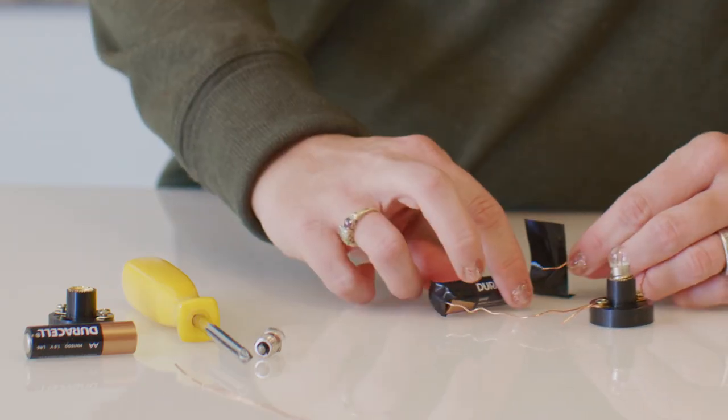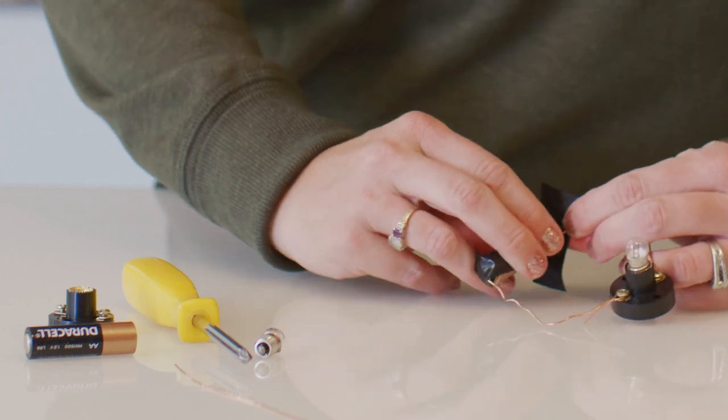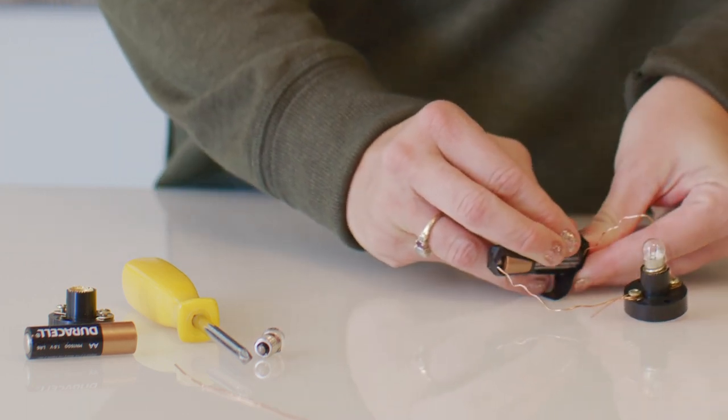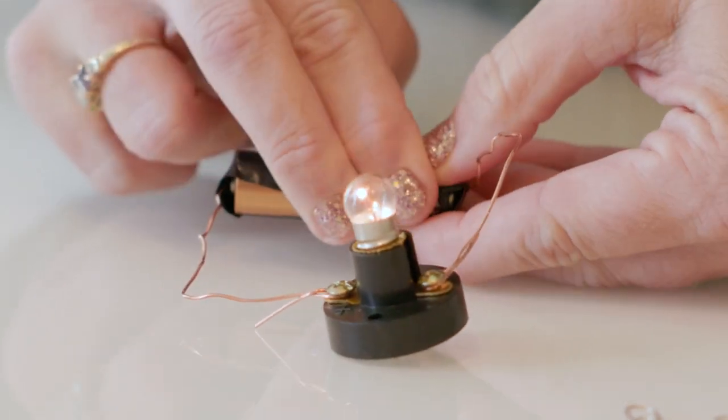Let's tape these wires to the positive and negative terminals of one of the batteries. Once each wire is connected properly, the light receives electricity and lights up. See?